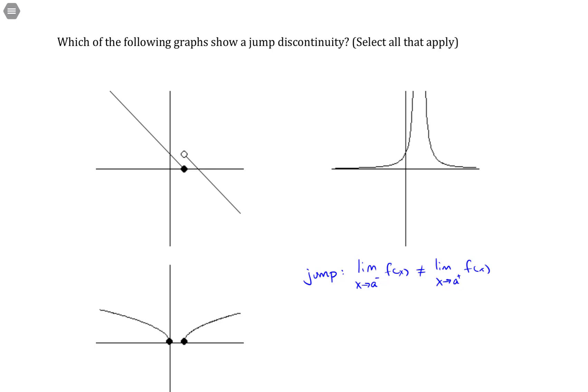So for instance, this particular graph, here's a value we'll call x equals a. As we approach a from the left, the y values are approaching one thing, looking like probably zero.